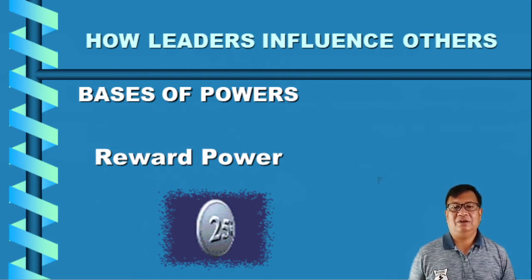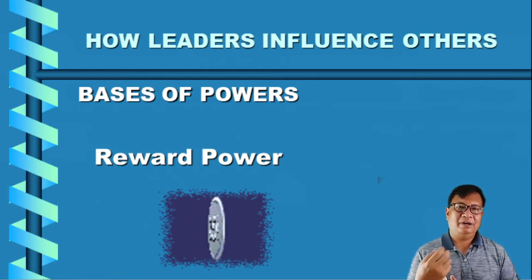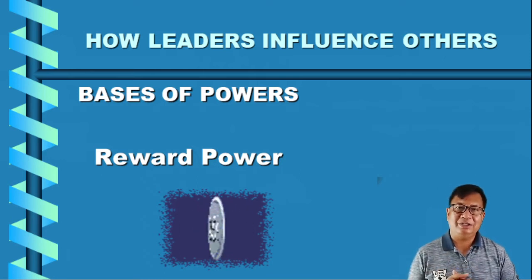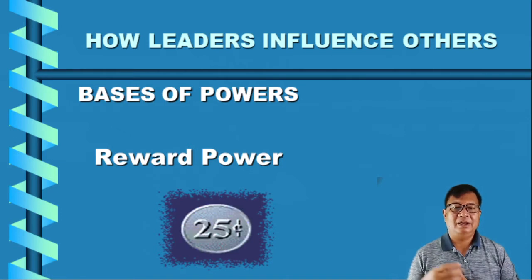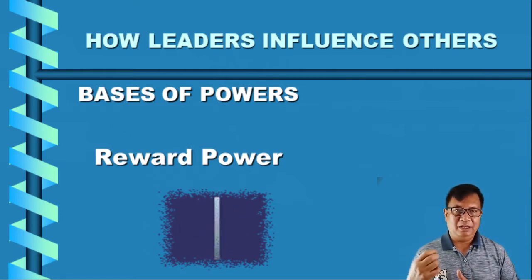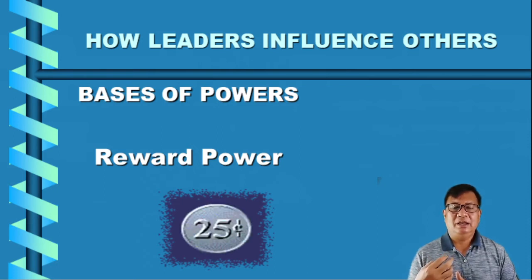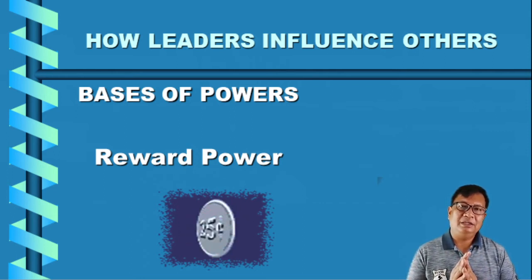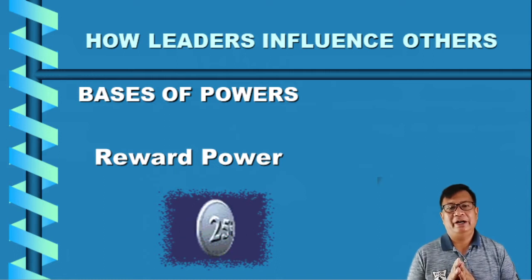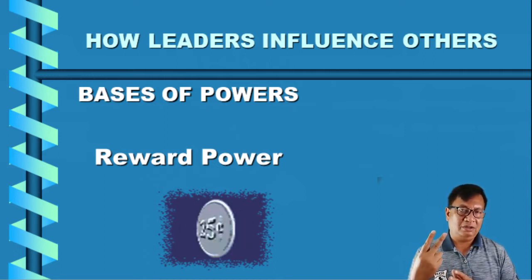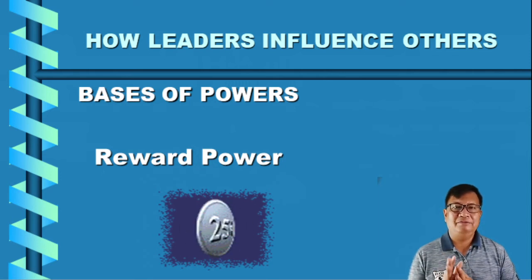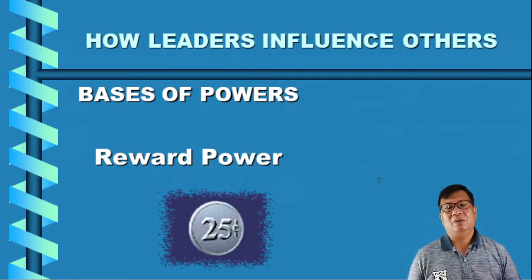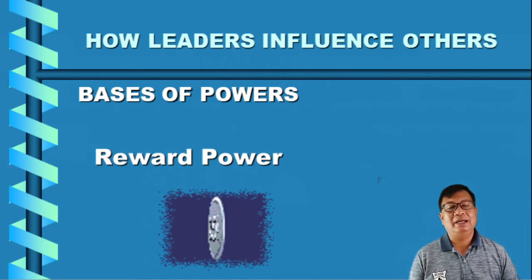Another basis of power to influence others is reward power. As discussed in Chapter 7 on motivating, we have extrinsic rewards given by others. If we as leaders have the authority to give rewards — whether psychological or material, such as money, bonuses, or incentives — then we have what is called reward power.